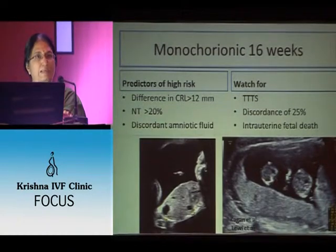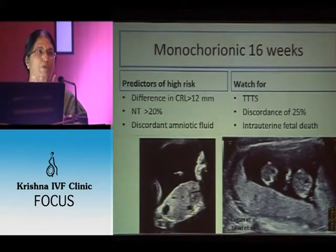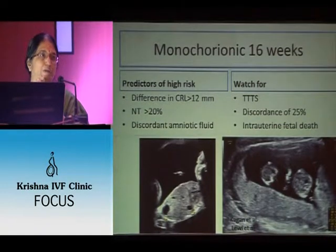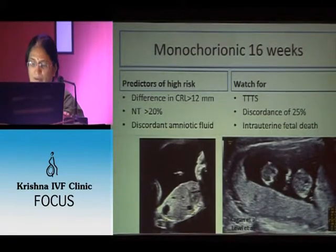If the discrepancy is more than 12 millimeters or NT difference is more than 20%, and there is discordant amniotic fluid, these fetuses are likely to progress to TTTS, weight discordance, or IUD. So it is very important that a 16-week scan in monochorionic pregnancy looks not only at size but also bladder size and liquor amount. If it's a monochorionic pregnancy, ask for a rescan at 16 weeks and then at 20 weeks. For a dichorionic pregnancy, ask for a rescan at 20 weeks for cervical length and TIFAR.